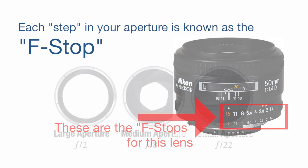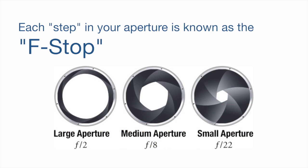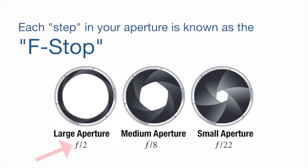Just remember that the higher a lens's aperture number is — which is represented by a number with the letter F in front of it — the less that lens will be able to see in low light conditions. And the lower the aperture number is, the more that lens can see in low light conditions.